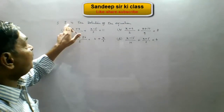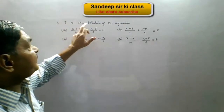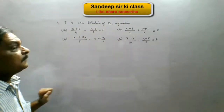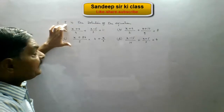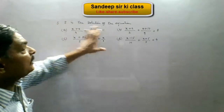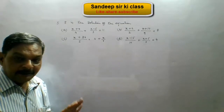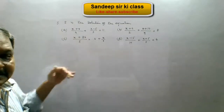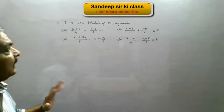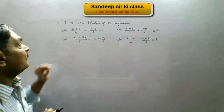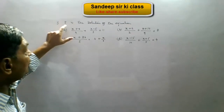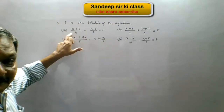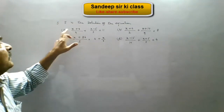Question number 5: 8 is the solution of one of the given equations, and four equations are provided as options. We see that if 8 is the solution, then substituting x equals 8 will satisfy the equation — its right hand side and left hand side will be equal. We start putting the value 8 in place of x in all the options, beginning with option A.